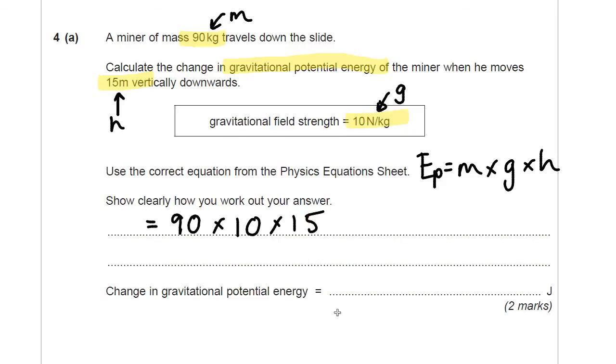Now I'll reach for the calculator. Always do use a calculator. There's no need to do extra brain work than you need. 90 times 10 times 15, 13,500. Don't worry about reading it out or knowing what the number says. Just write down every digit on your calculator. You don't need to put a unit on because there is one at the end there. And it's only worth two marks.